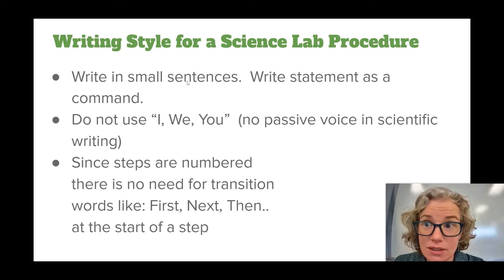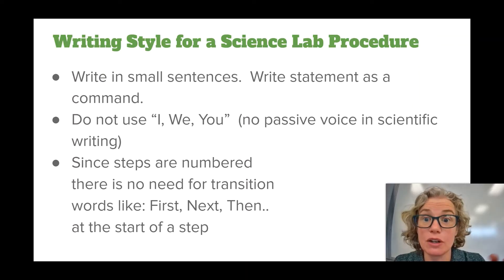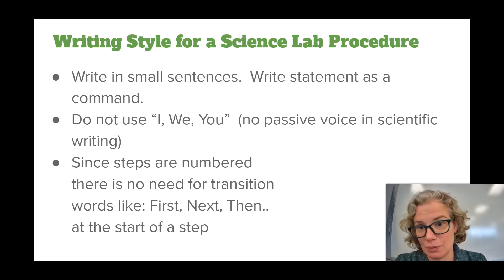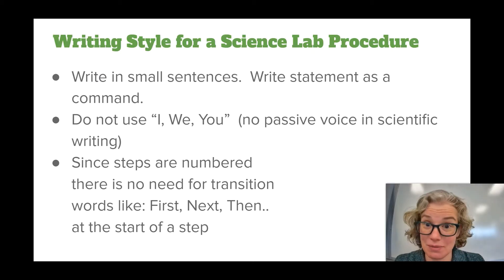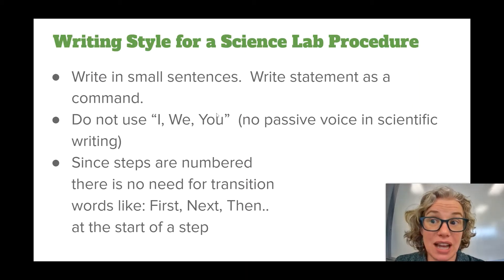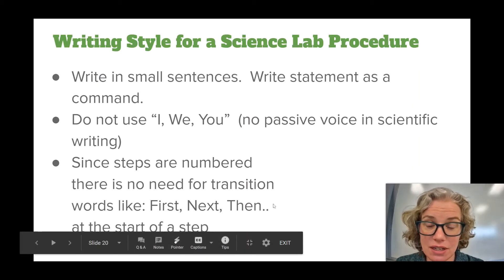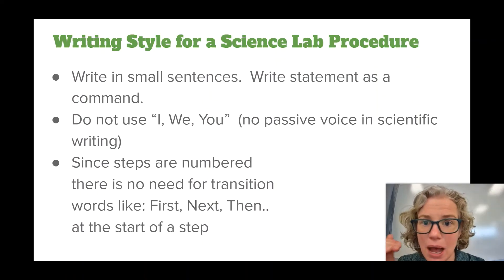Write in small sentences. If it becomes too large, maybe that's a hint that you need to split it into two steps. You write it as a command statement — for example, 'Fill the beaker with five milliliters of water.' Don't say 'first fill the beaker...' and don't say 'I filled the beaker with five milliliters of water.' I know it sounds rude, but it's the way that we write science procedures. Avoid using I, we, and you. And because your steps are numbered, don't use little transition words at the start of a sentence — we want it to be as succinct as possible.